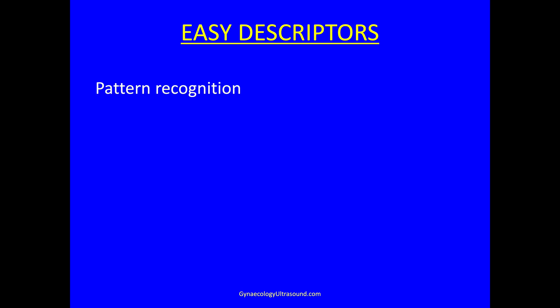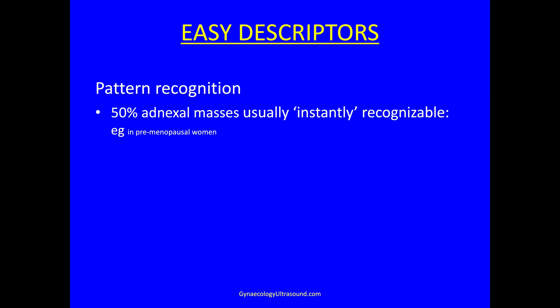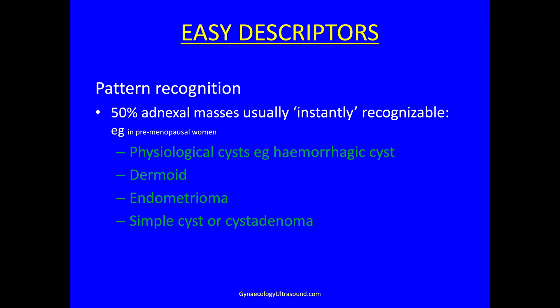Easy descriptors are basically pattern recognition, and about half of all adnexal masses are usually instantly recognisable. For instance, in premenopausal women, a cyst that would be physiological, or maybe a dermoid cyst, an endometrioma, or a simple cyst or cyst adenoma. And particularly in postmenopausal women, something that looks like a malignant tumour with ascites.